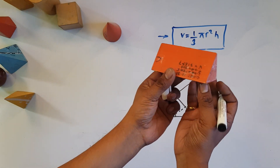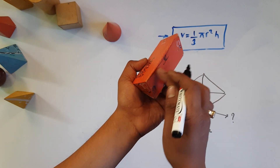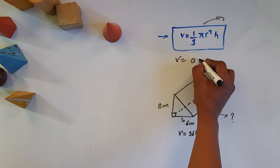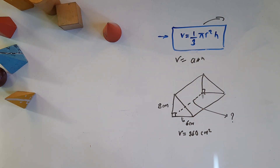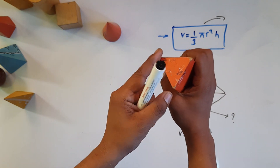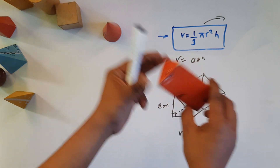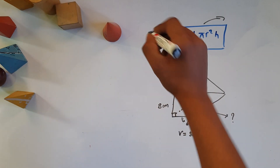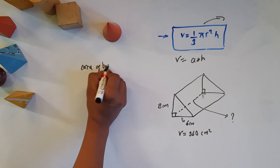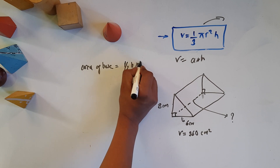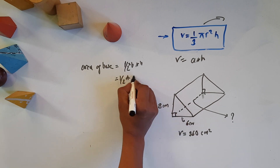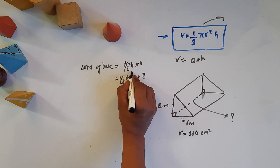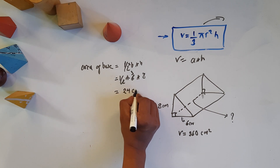The right angle triangle diagram is given. The formula for volume is area of base into height. Since this is a triangular prism, the area of the base is the area of a right angle triangle, which is half base into height. That gives us 24 cm squared as the area of the base.